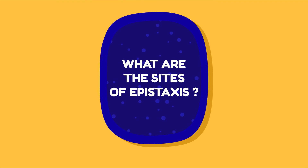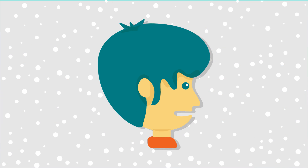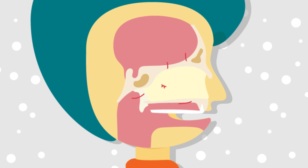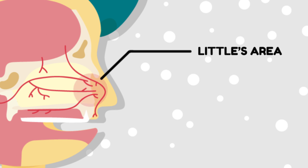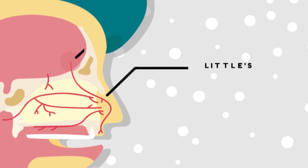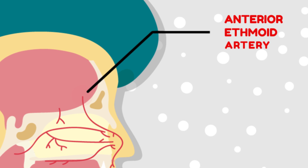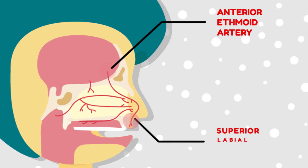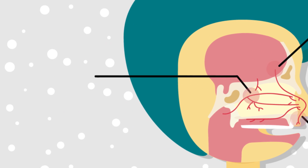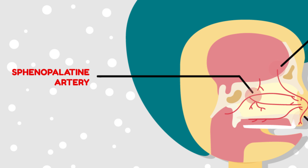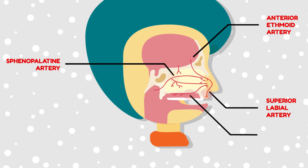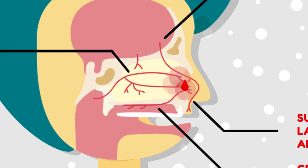What are the sites of epistaxis? The most important site is Little's area, from which 90% of cases of epistaxis occur. It is situated in the antero-inferior part of the nasal septum. Four arteries anastomose here: the anterior ethmoidal, septal branch of the superior labial, septal branch of the sphenopalatine, and the greater palatine artery.